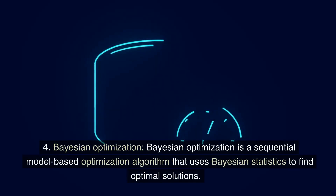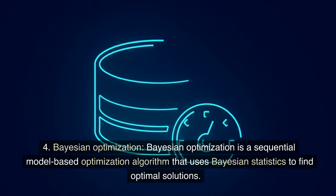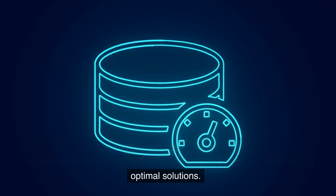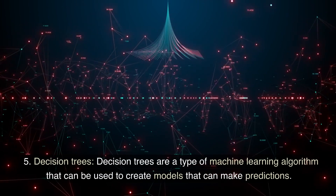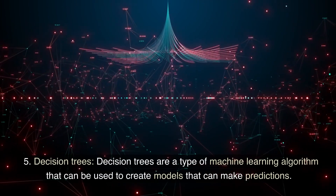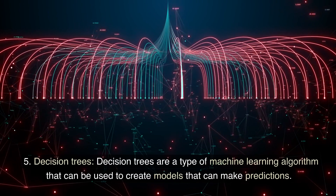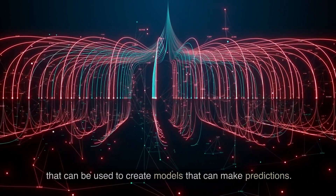4. Bayesian optimization — a sequential model-based optimization algorithm that uses Bayesian statistics to find optimal solutions. 5. Decision trees — a type of machine learning algorithm that can be used to create models that can make predictions.